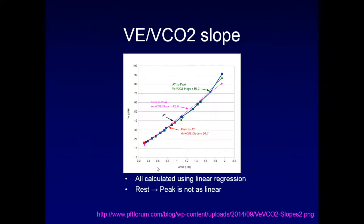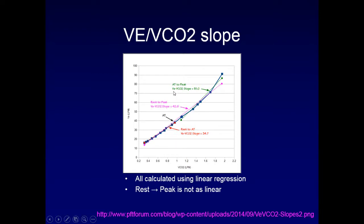How do we figure out which measurement to use, and why does it matter? Looking at an example using the slope method: measuring VE/VCO2 slope from rest to anaerobic threshold gives a slightly abnormal value of 34.5. But measuring rest to peak in the same patient yields 42.6 — really abnormal. And from anaerobic threshold to peak it's even more abnormal. So how you measure it actually defines normal and abnormal.